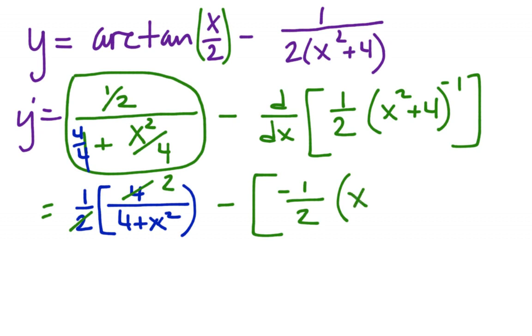So the derivative of the outside times the derivative of the inside, 2x. All right, so that's going to get all fixed. 2 and the 1 half cancel. This goes to positive. This goes in the denominator.